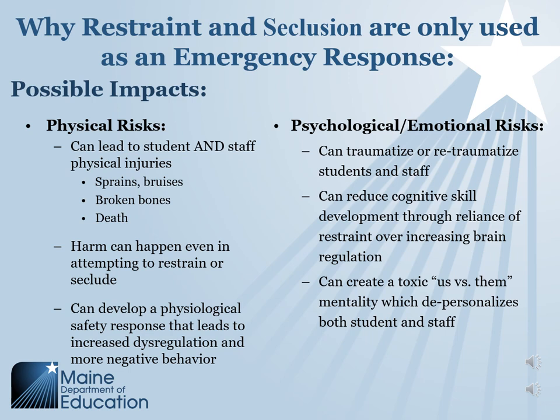A way to think about the impacts of restraint and seclusion is to use the airbag as an analogy. While traveling in a car, if we get into an accident the airbag deploys to keep us safe from the worst things that can happen — it's there to protect us from significant harm. But the airbag itself can also do harm: when our bodies impact it, we're still being hurt, just not as intensely as if it weren't there. Similarly, restraint and seclusion should only be used in an emergency, because the risk of harm must be outweighed by the risk of why we're intervening.